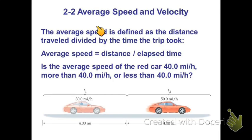Now let's define what the average speed is. The average speed is defined as the distance traveled divided by the time the trip took.